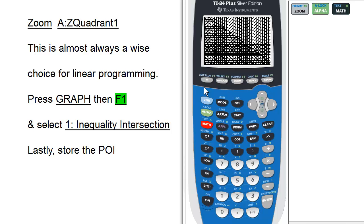For linear programming, almost all the action is in the first quadrant. So, Zoom A Z Quadrant 1 is almost always a good choice.